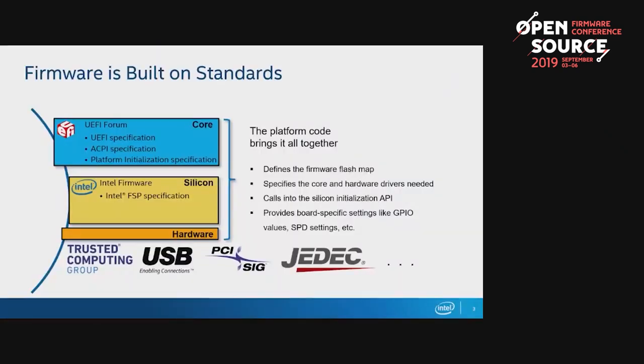Getting more specifically to what the platform does: it defines the firmware flash map, which is very platform- or board-specific depending on security boot technology or cache properties. It specifies the hardware drivers and core drivers needed, and chooses which drivers to use. It calls into the FSP to do FSP-T, M, and S APIs for temporary RAM, memory init, and silicon initialization. A lot of board-specific information — like GPIOs, serial presence detect — is in this code. For example, if you have solder-down memory, you might have your SPD table hard-coded in your board code; otherwise you might read it over SMBus.